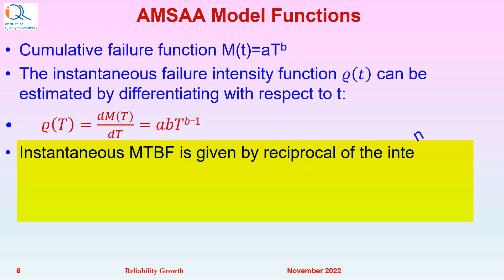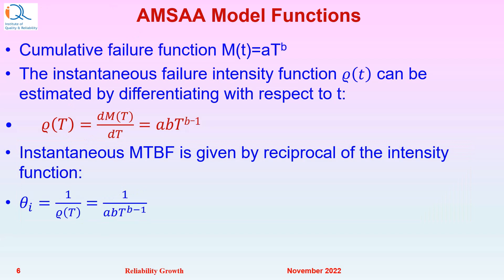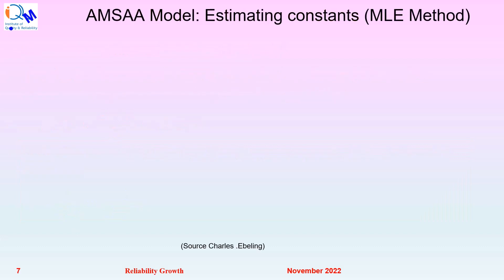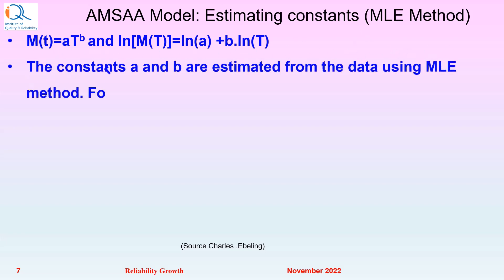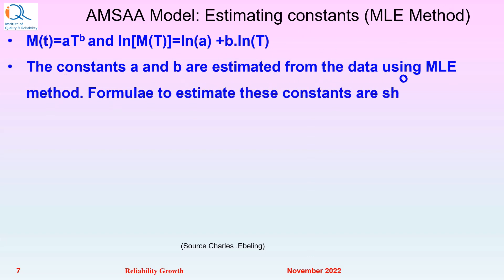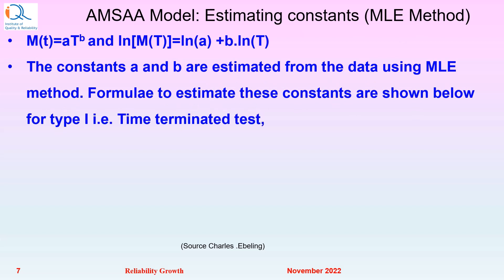The instantaneous MTBF is given by the reciprocal of the intensity function: theta_i equals 1 over rho(T), which equals 1 over A·B·T raised to B minus 1. The constants A and B are estimated from data using the Maximum Likelihood Estimate, or MLE method. Formulae to estimate these constants are shown for Type 1, that is, time-terminated tests.